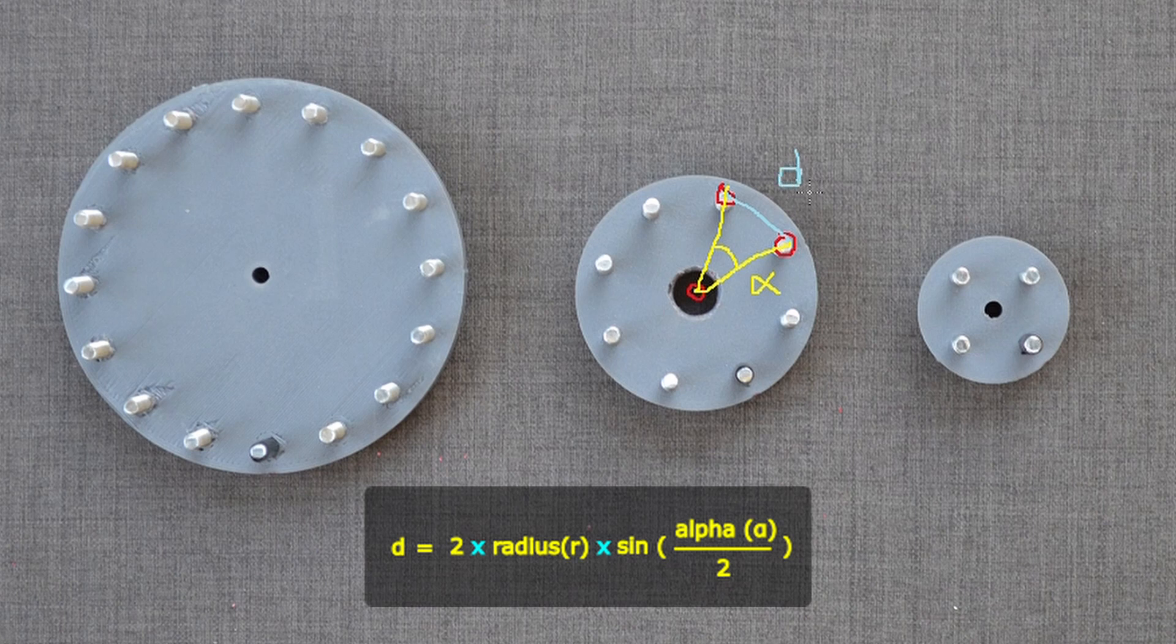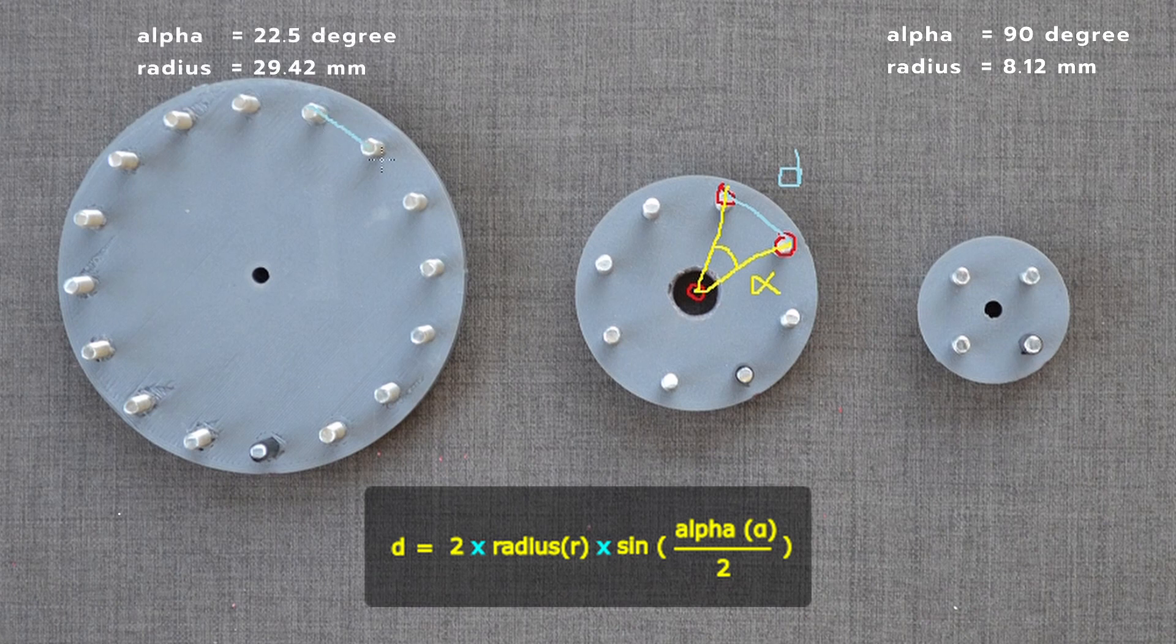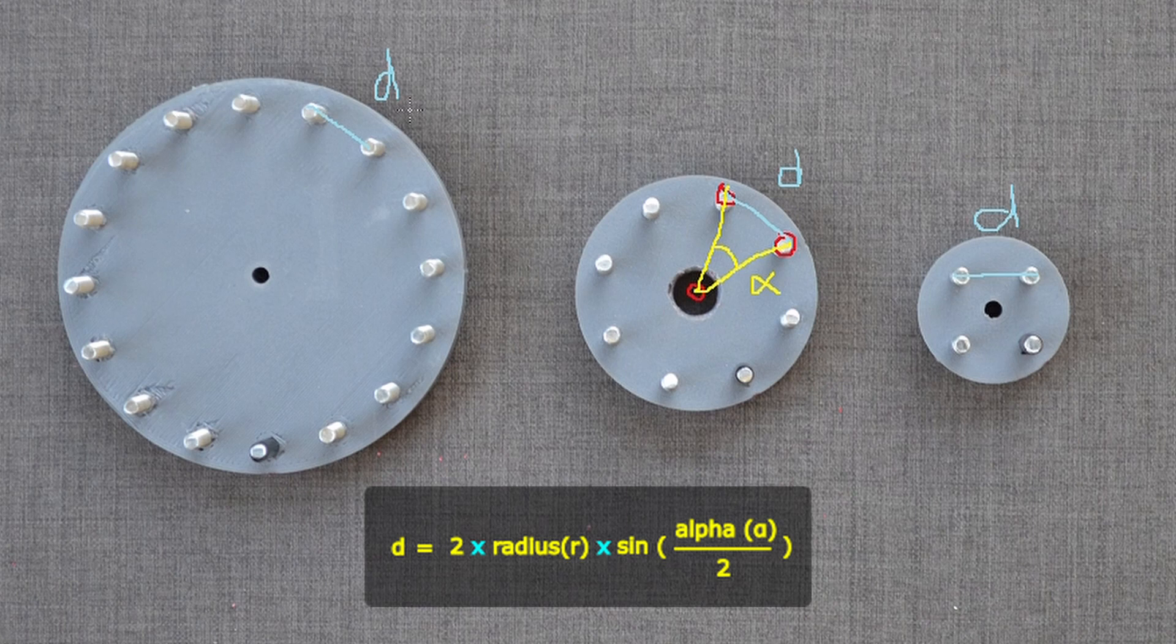For 4 pins, alpha will be 90 and radius will be 8.12 mm. For 16 pins, alpha will be 22.5 degrees and radius 29.42 mm. That way we can keep the distance between 2 pins same.